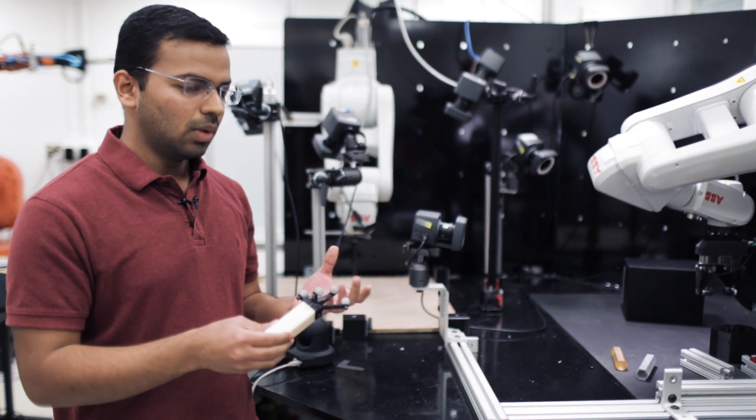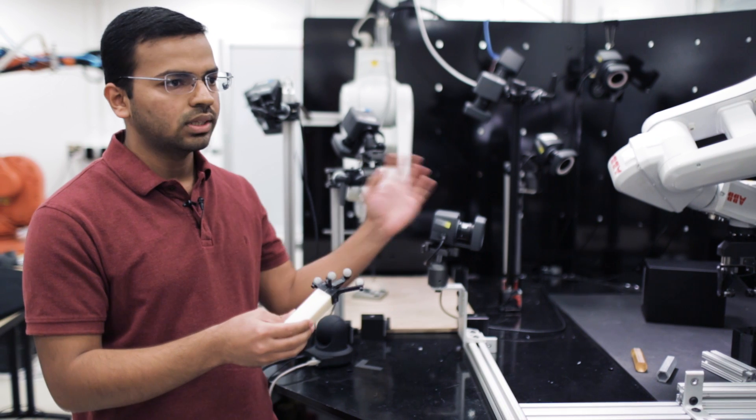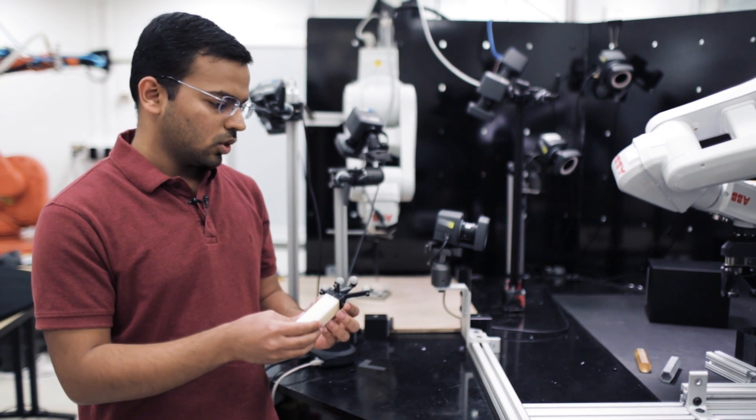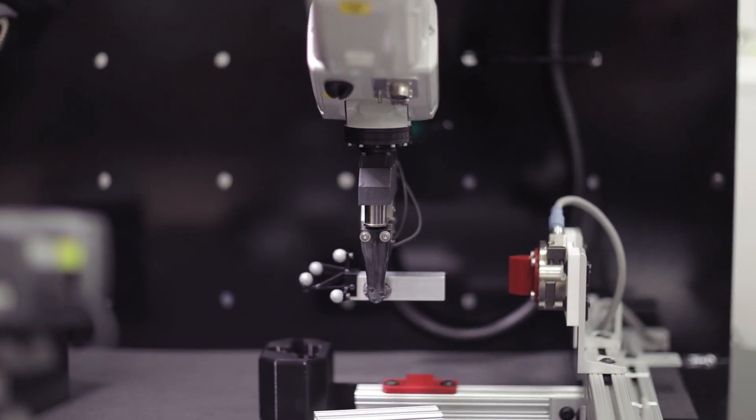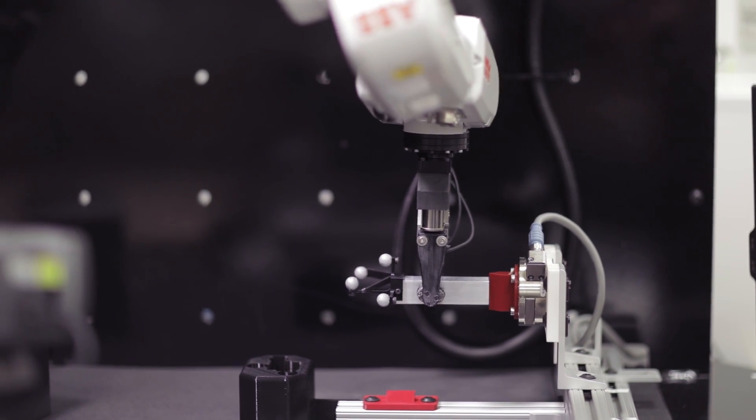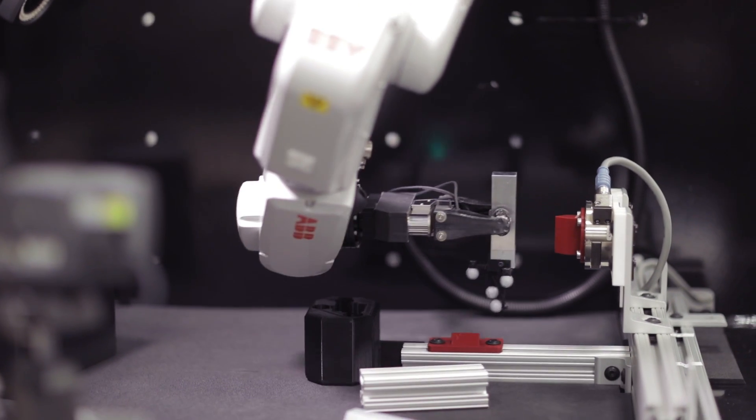The object has markers that are tracked using cameras in the system. So at every time, the robot knows where the desired object is. Using this object tracking, it can locate the object and then track it as it's manipulating it.